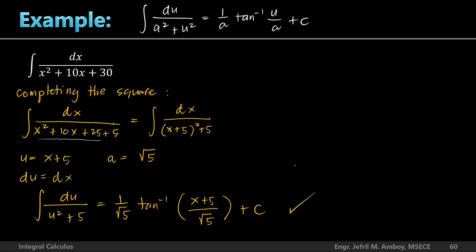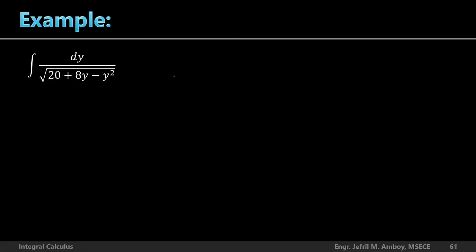That's our final answer. When you see a quadratic denominator with no square root, completing the square converts it into the a² + u² form, giving an inverse tangent result.